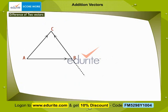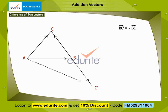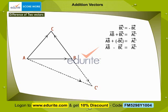Consider vector BC dash, so that its magnitude is the same as vector BC but it has the opposite direction. BC dash = −BC. By applying the triangle law of addition, AB + BC dash = AC dash, which means AB + (−BC) = AC dash, or AB − BC = AC dash. AC dash represents the difference of the two vectors AB and BC.